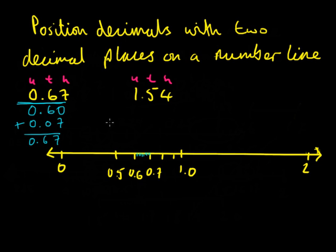And so we can put 0.67 on our number line between 0.6 and 0.7, 0.67.